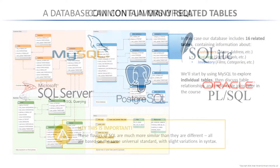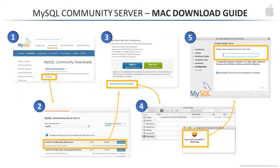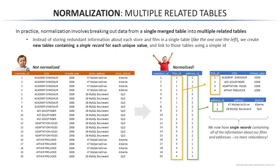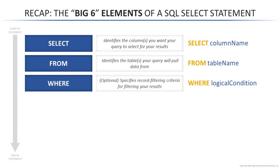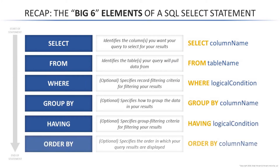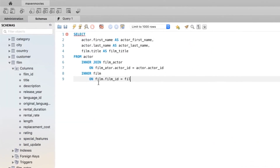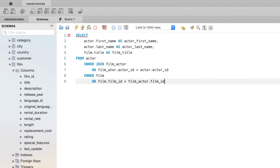We'll start with a quick introduction to SQL and its various flavors, then we'll download the tools that we'll need to access the Maven Movies database, and we'll address some key database fundamentals. Once we're up and running, we'll dive right into single table analysis using queries to select, filter, sort, and group our data. From there, we'll shift into more complex use cases, and we'll practice analyzing data across multiple tables using join statements.